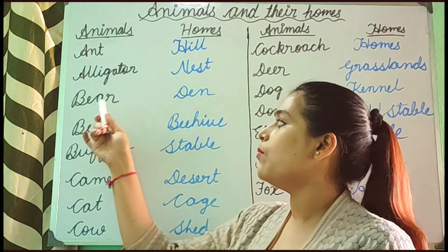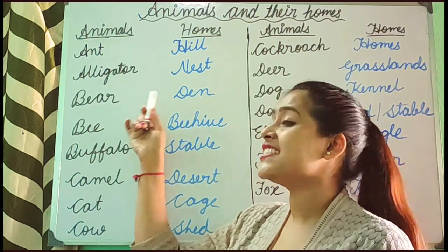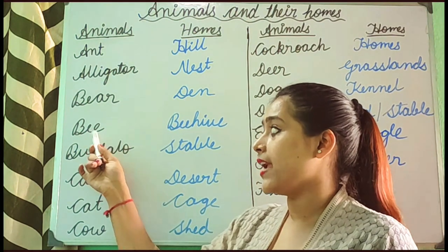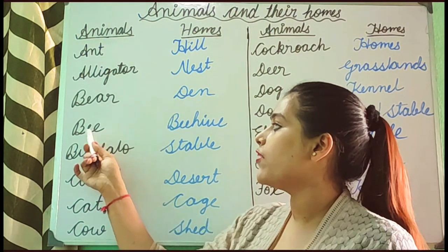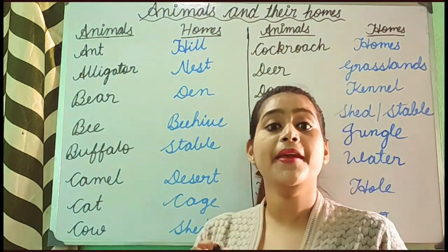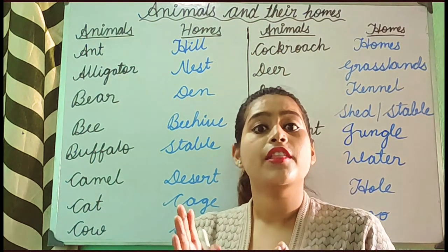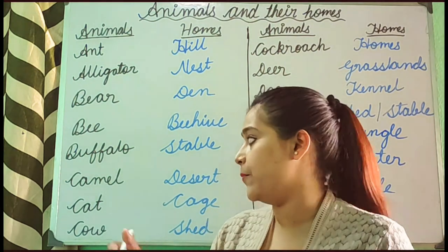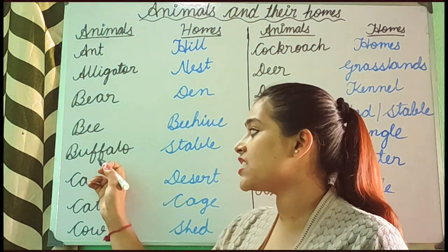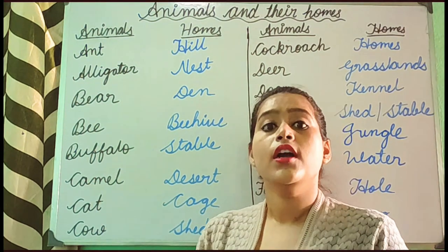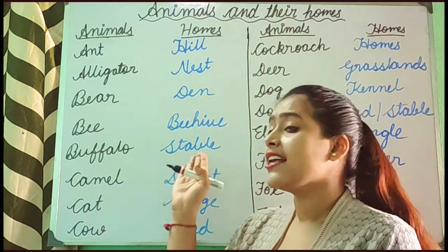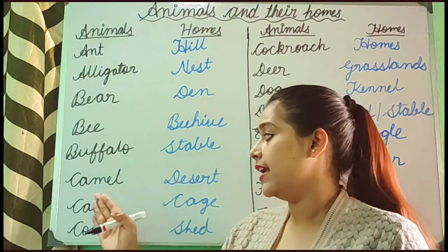Next, Bear. The home of a bear is dame. Next, Bee. The home of a bee is beehive. Next, Buffalo. The home of a buffalo is stubble.